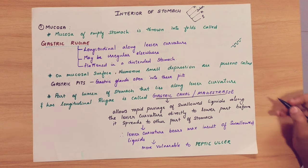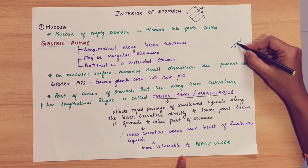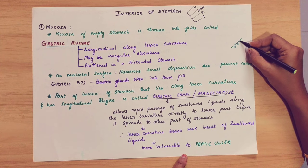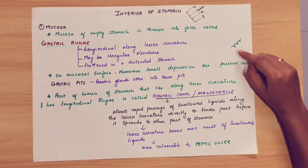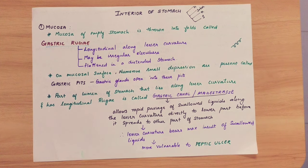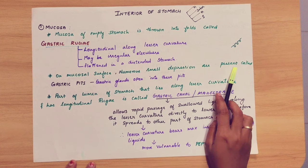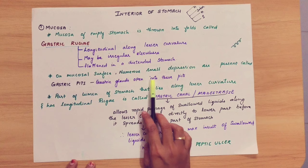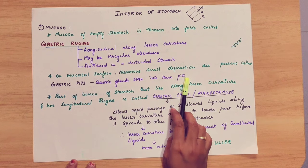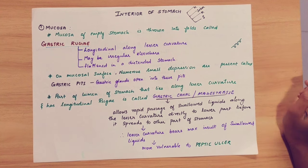Into these pits, gastric glands are present. The gastric glands produce gastric enzymes. On the mucous surface, numerous small depressions called gastric pits are present, and gastric glands open into these pits.